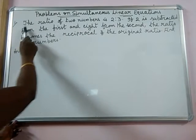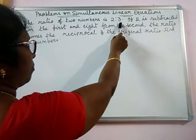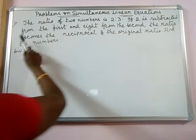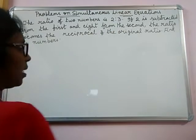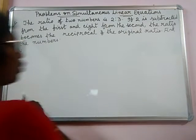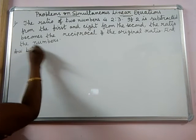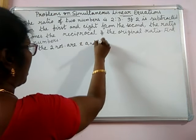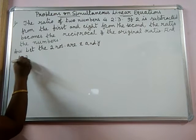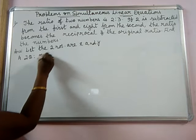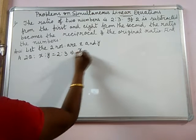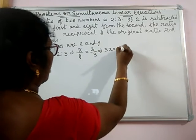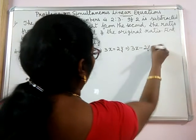Today's first question is: the ratio of two numbers is 2 is to 3. If 2 is subtracted from the first and 8 from the second, the ratio becomes the reciprocal of the original ratio. Find the numbers. Let the two numbers be x and y. According to the question, x to y is 2 to 3, that implies x by y equals 2 by 3. That implies 3x equals 2y, or 3x minus 2y equals 0.